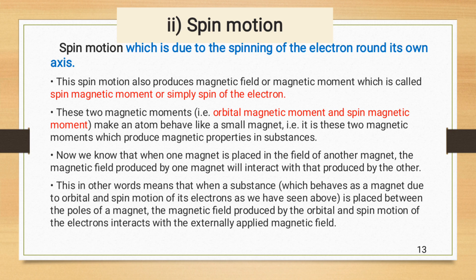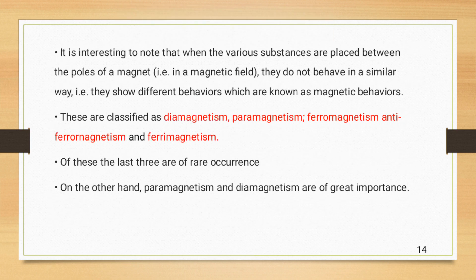This in other words means that when a substance which behaves as a magnet due to orbital and spin motion of its electrons is placed between the poles of a magnet, the magnetic field produced by the orbital and spin motion of the electrons interacts with the externally applied magnetic field. When the various substances are placed in a magnetic field, they do not behave in a similar way. They show different behaviors which are known as magnetic behaviors.